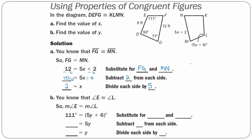Now find the value of Y. Y is the measure of angle L, which is the second letter of quadrilateral KLMN, so it is congruent to angle E — the second letter of quadrilateral DEFG. Since these two angles are congruent, their measures are equal: 111 = 5Y + 6. Subtracting 6 from both sides gives 105 = 5Y. Dividing by 5 gives Y = 21.